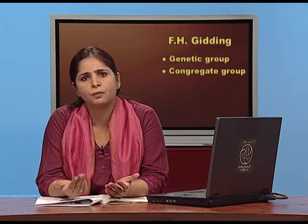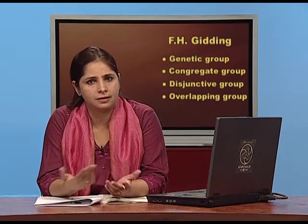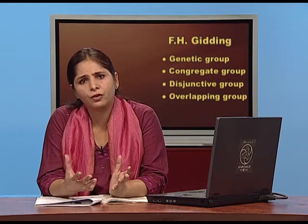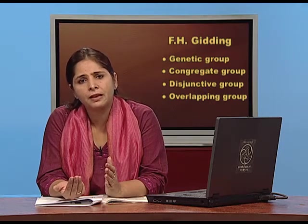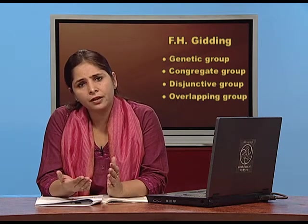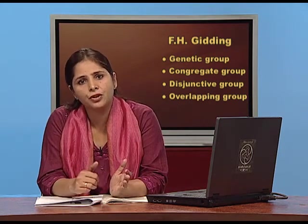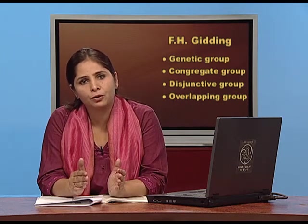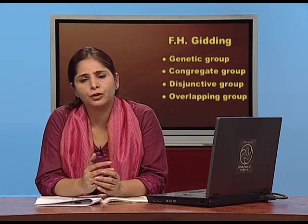Another classification was given by Giddings. He identified four types: genetic, congregate, disjunctive, and overlapping groups. A genetic group is similar to the involuntary group — based on blood relationships. A congregate group is formed when people with similar interests come together. A disjunctive group is one where being a member of one particular group does not allow you to be a member of another. An overlapping group is one where membership allows you to be a member of other groups as well.